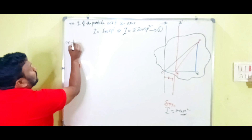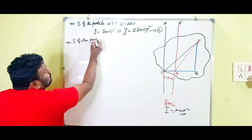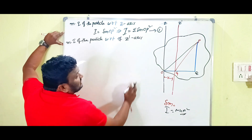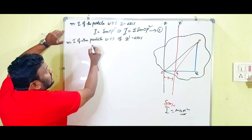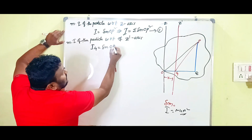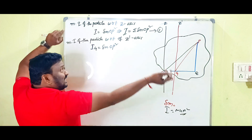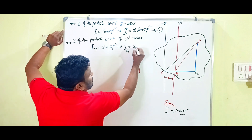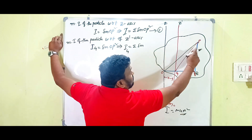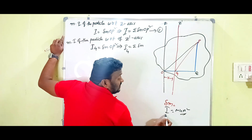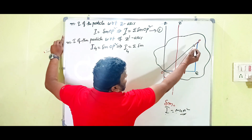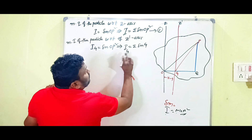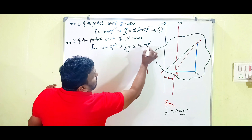Similarly, the moment of inertia of the particle with respect to the Z-dash axis — which passes through the center of mass — is Ig = δM × GP². For the entire plane lamina, Ig = Σ(δM × GP²), where GP is the distance from the Z-dash axis to the particle. This is equation number 2.